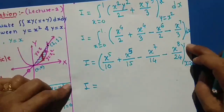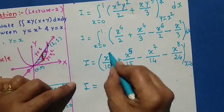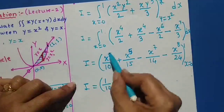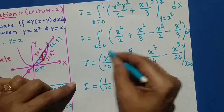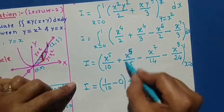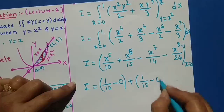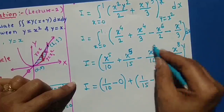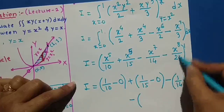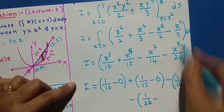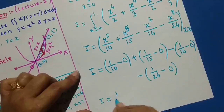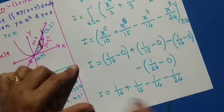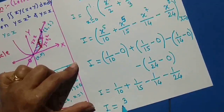Applying x from 0 to 1 — first the upper limit x = 1, then minus the lower limit x = 0. The lower limits all vanish. We get I = 1/10 + 1/15 − 1/14 − 1/24. Calculating this value, we get I = 3/56. This is the required value of the double integration.